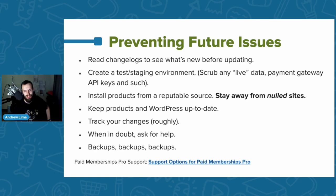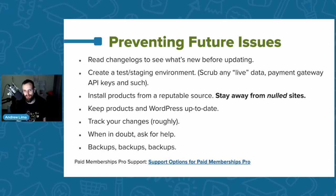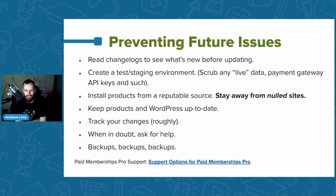Install products from reputable sources — stay away from null sites. Null sites are selling plugins with malware injected into them, selling products for $3 that are normally $300. Rather reach out to the plugin developers or our team if you can't afford PMPro and they'll try to work something out for you. Keep products and WordPress up to date — I've seen a lot of issues where a plugin is on version 2.3 while the current version is much newer, and then PHP 8 compatibility breaks things. Keep things up to date after checking your changelogs.